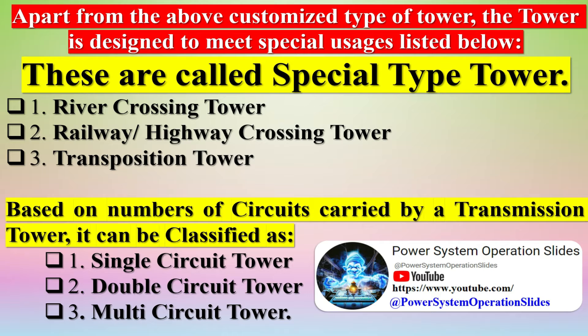Based on the number of circuits carried, a transmission tower can be classified as a single-circuit tower, double-circuit tower, or multi-circuit tower.